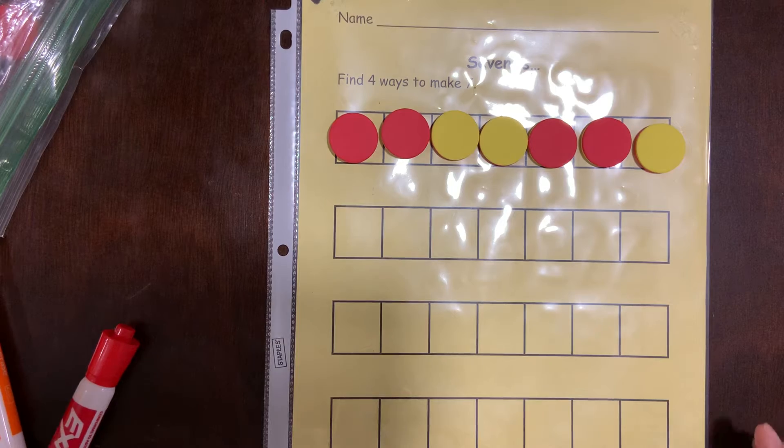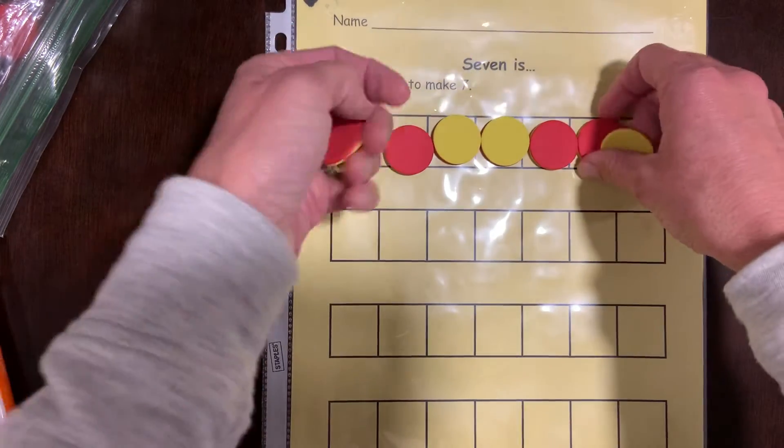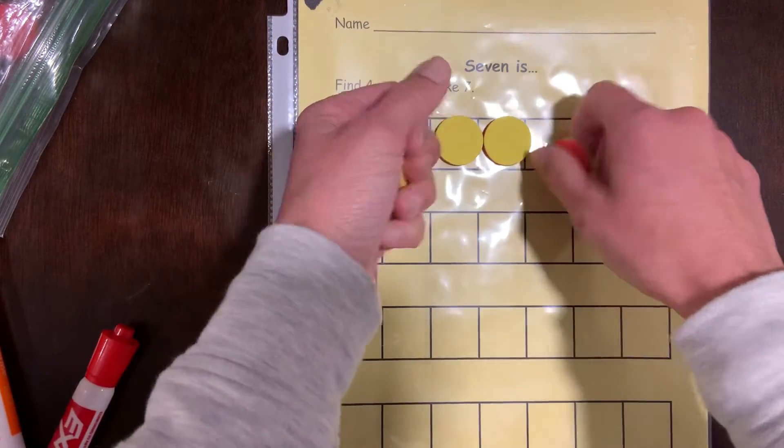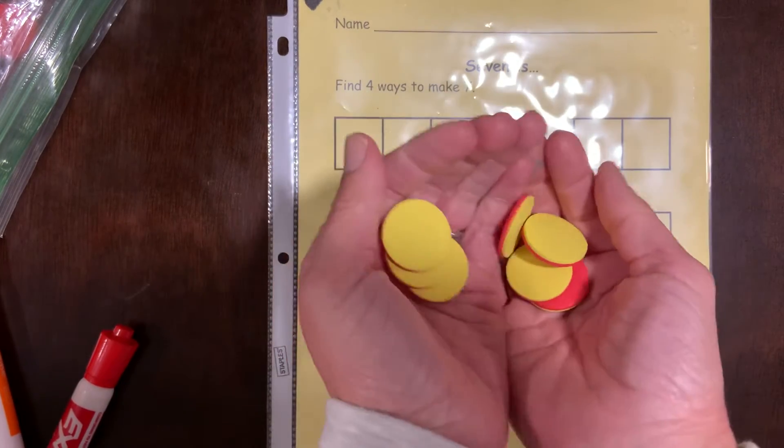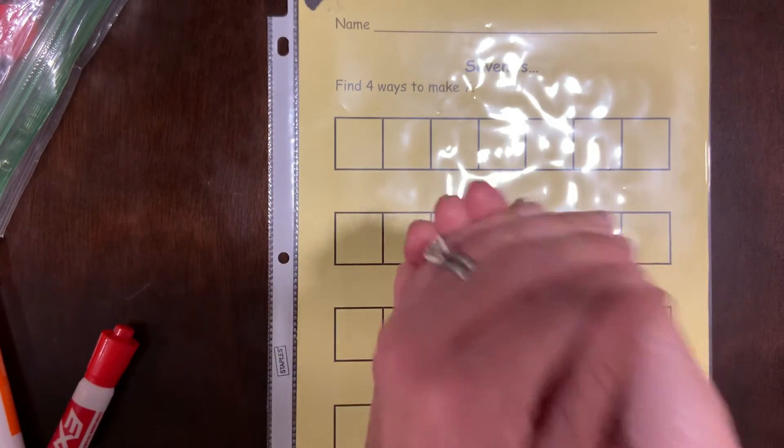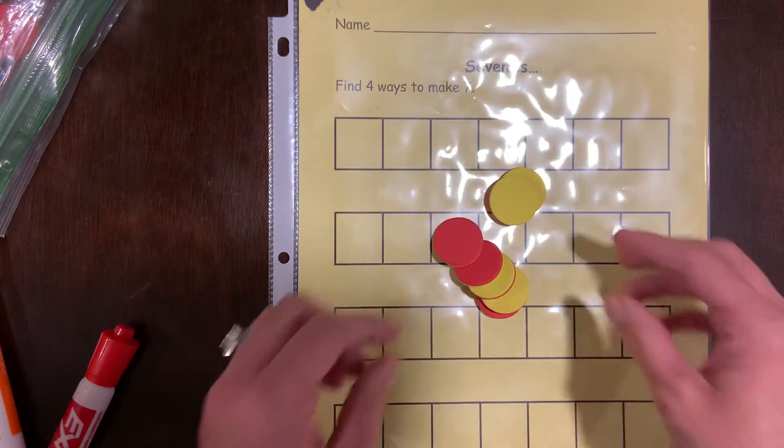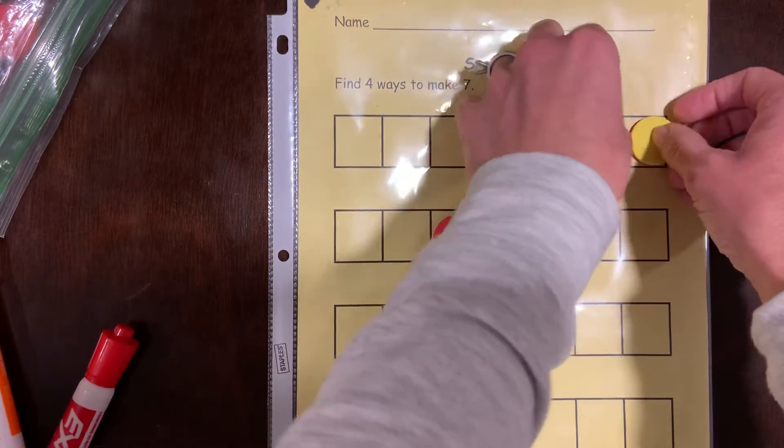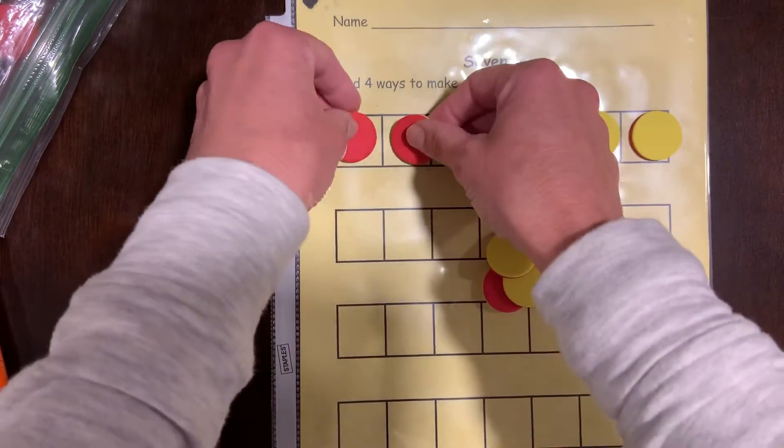Pause me if you're not ready, but if you are, you're going to do the same activity we did for ways to make five and ways to make six. You're going to take your counters, give them a little shake, drop them, then put all of your yellows together and all of the reds together.